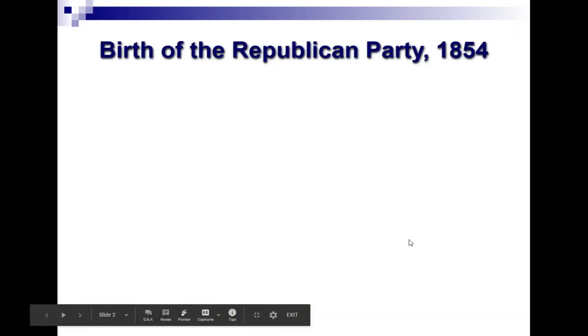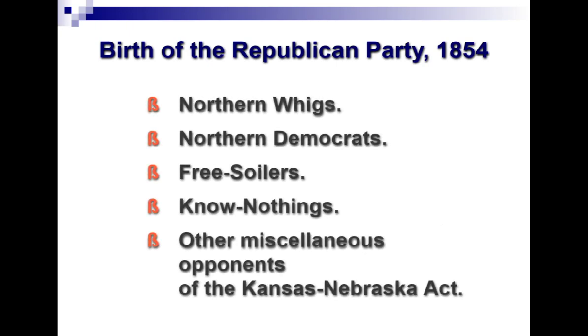Picking up with the birth of the Republican Party in 1854. This is going to be the third time we have a renewed two-party system — first the Federalists and the Anti-Federalists, then the Democratic-Republicans and the Whigs, and now we're going to have the Republicans and the Democrats. This new party is going to be made up of the Northern Whigs, the Northern Democrats, the Free Soilers, the Know-Nothings, and pretty much anyone who disagreed with the Kansas-Nebraska Act — that was the popular sovereignty vote that led to the events of Bleeding Kansas.